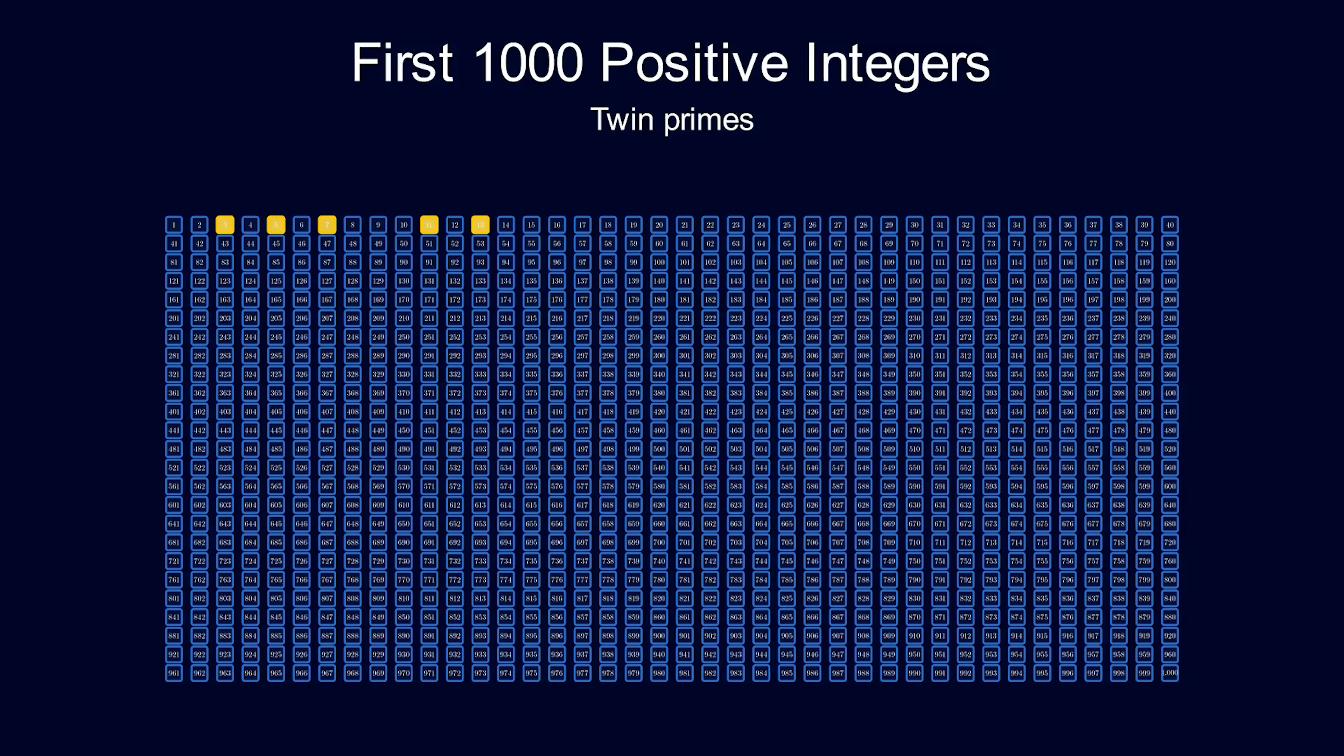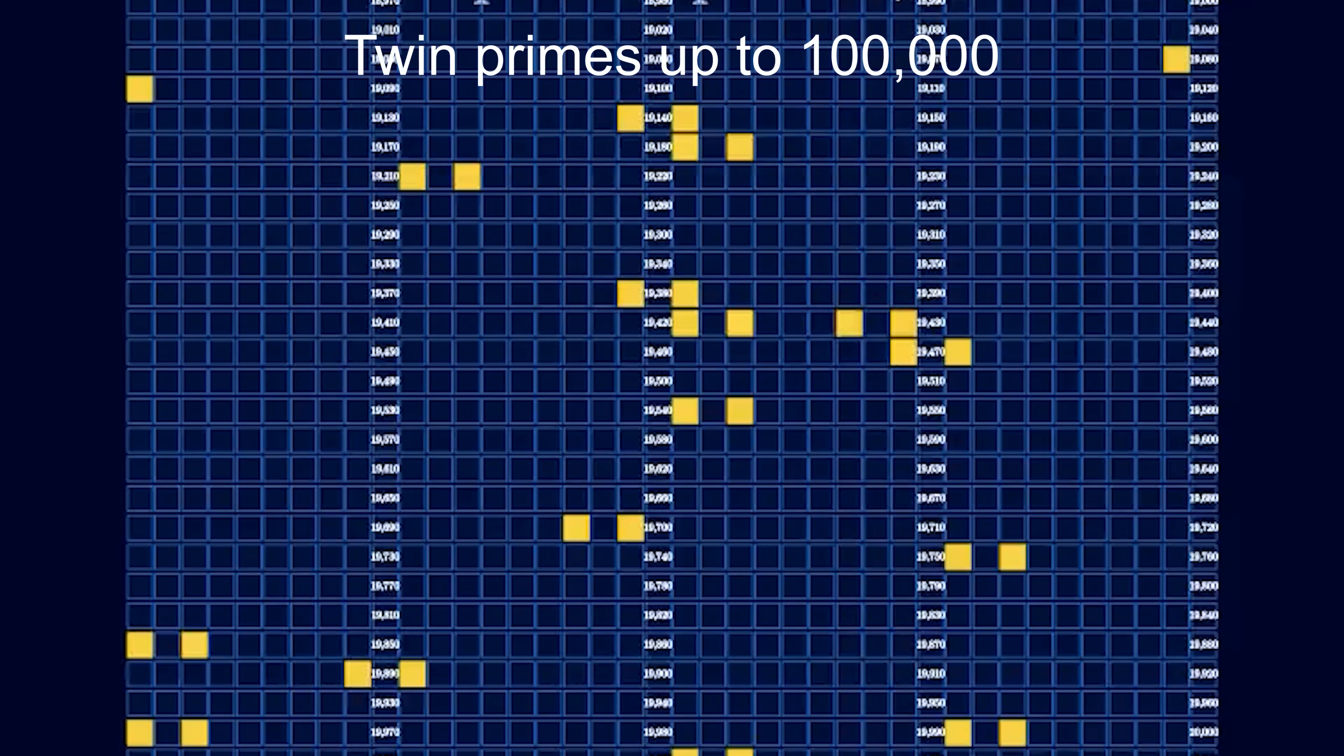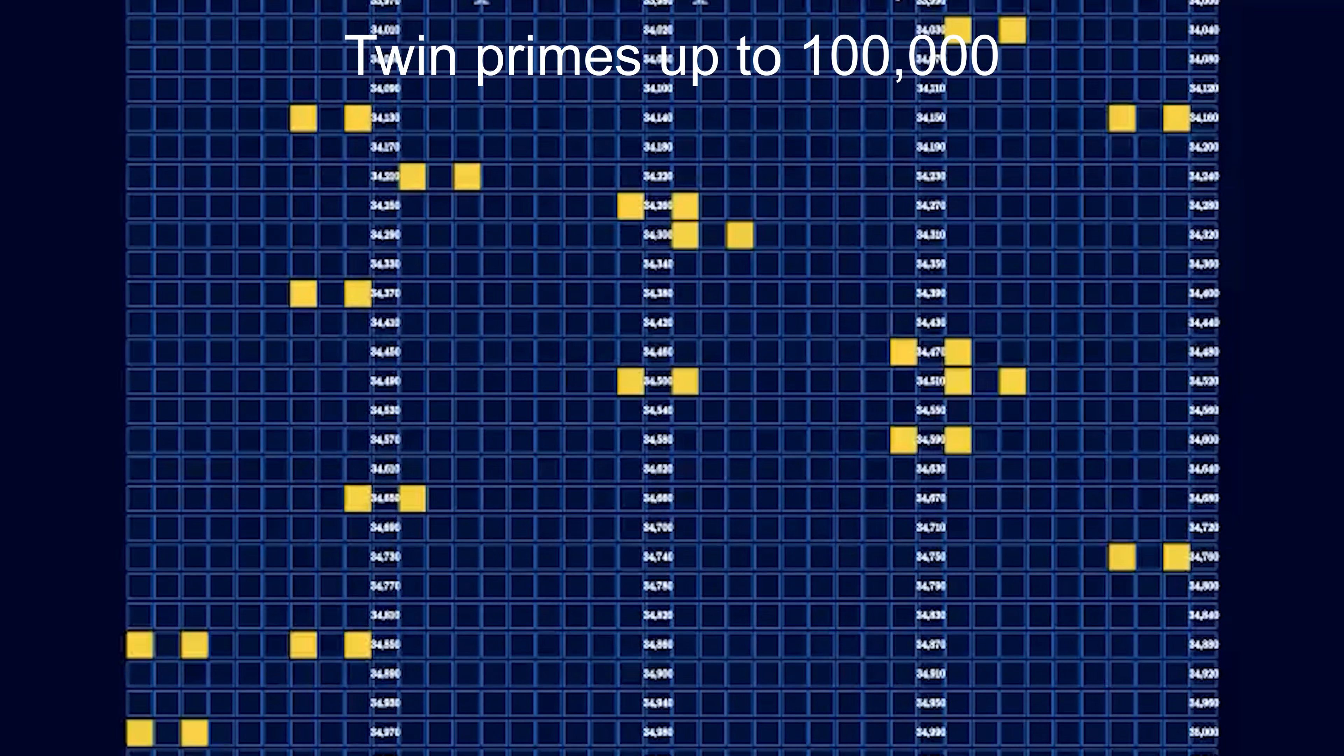In the first 1000 positive integers, here are the twin primes highlighted. The twin primes seem to keep popping up, even though they don't seem to be very common.